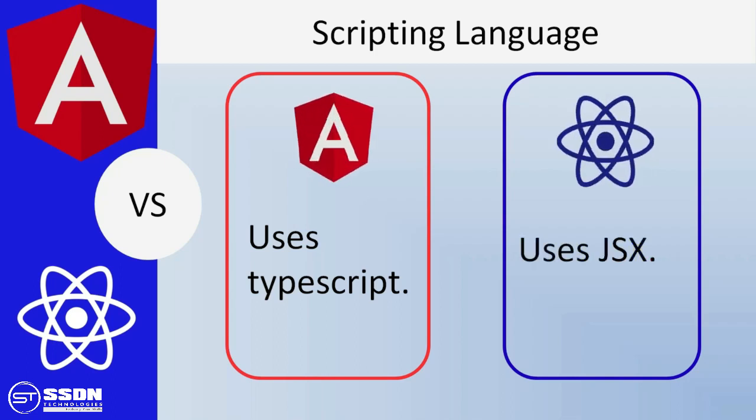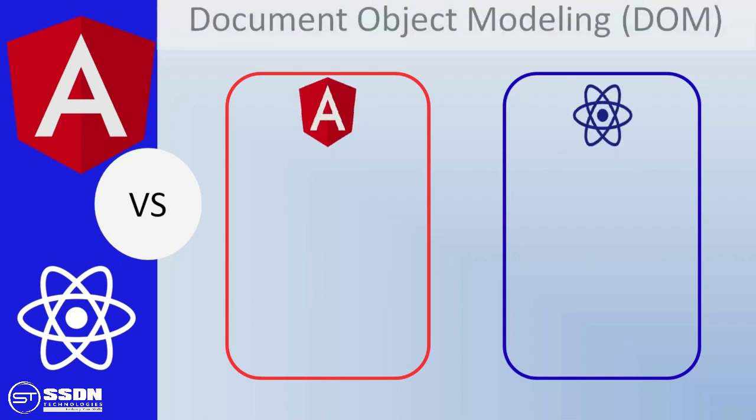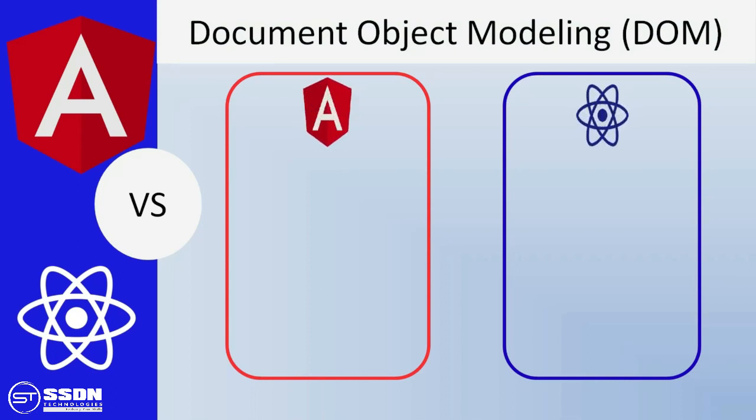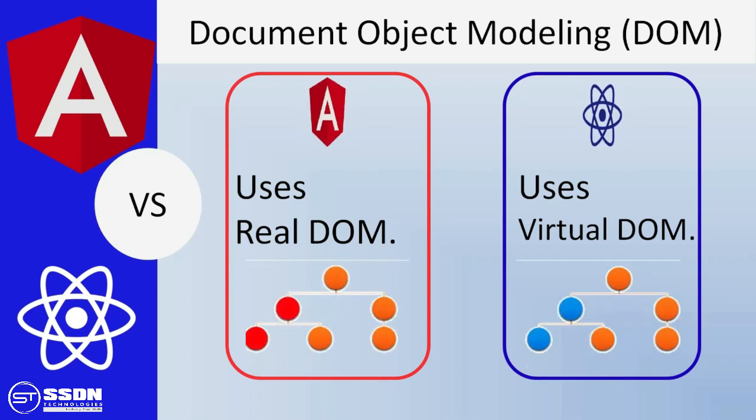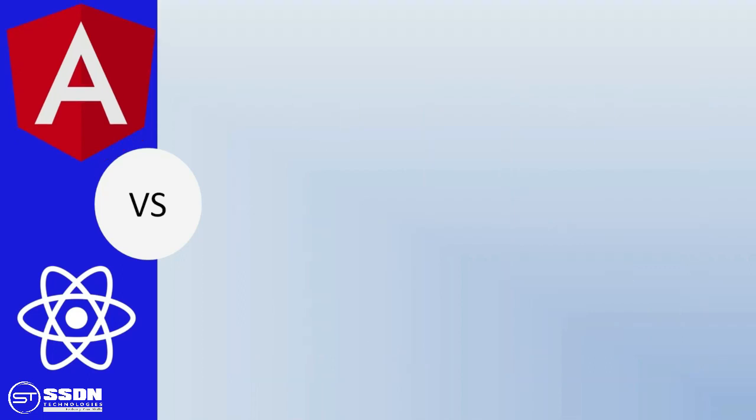The next is Document Object Modeling. Angular uses a real DOM while React uses a virtual DOM. In Angular, you have to update the whole DOM tree while in React, the code can make small changes without changing the whole DOM tree.